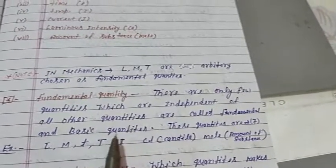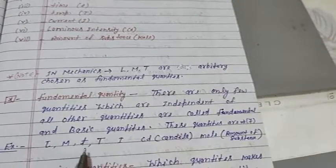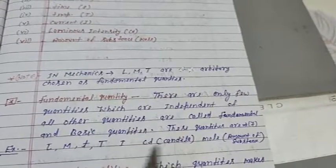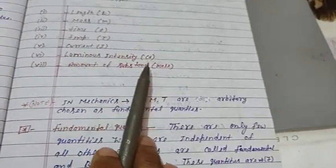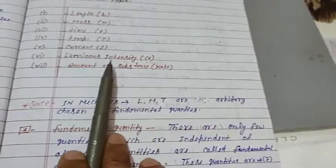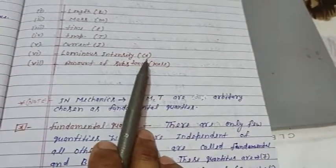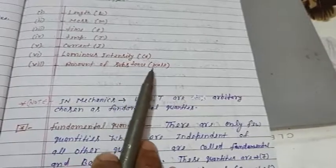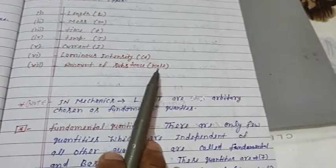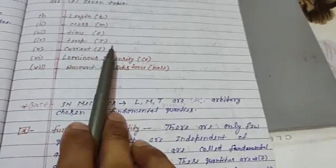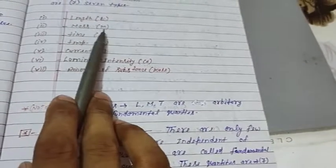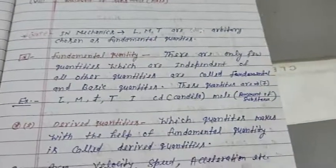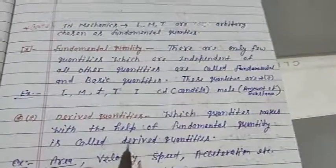Mostly seven types of fundamental quantities which are L, M, T, theta, I, C. Candela, luminous intensity, and amount of substance, M, T.